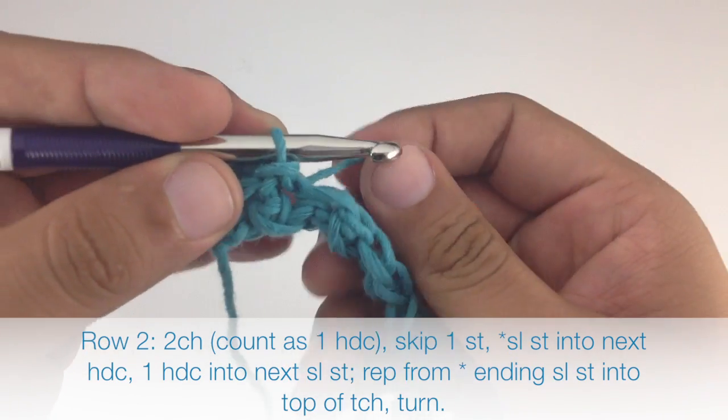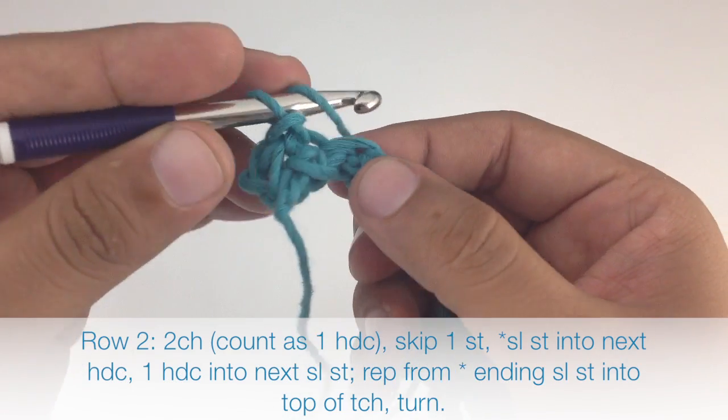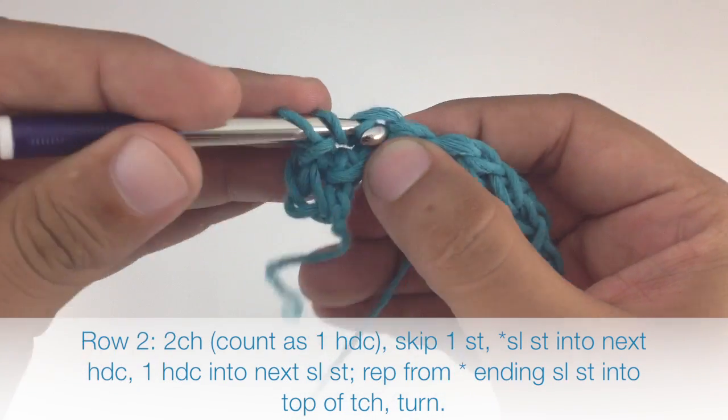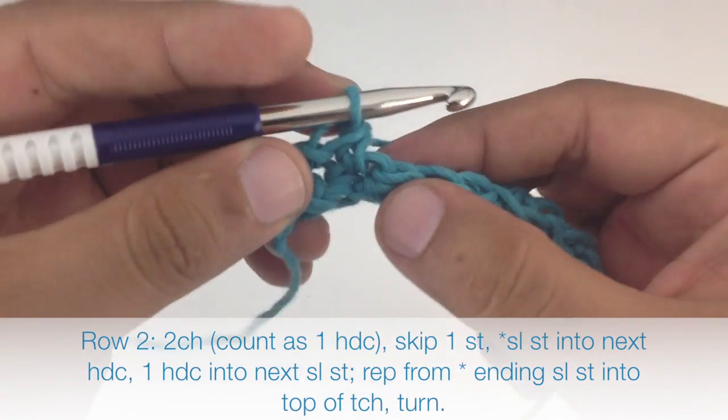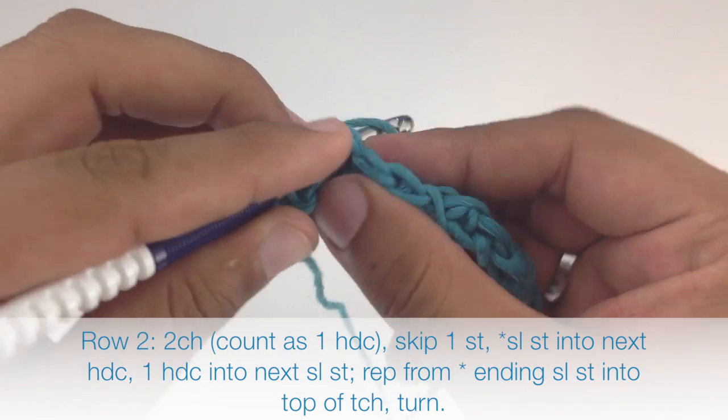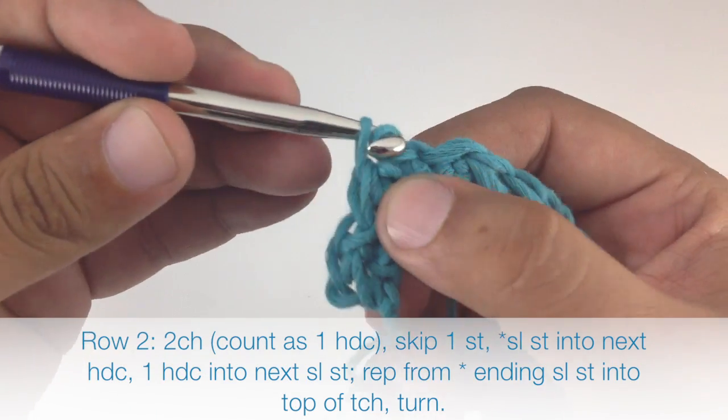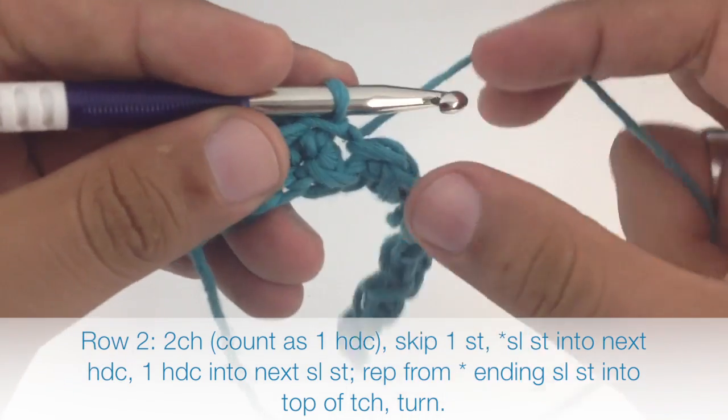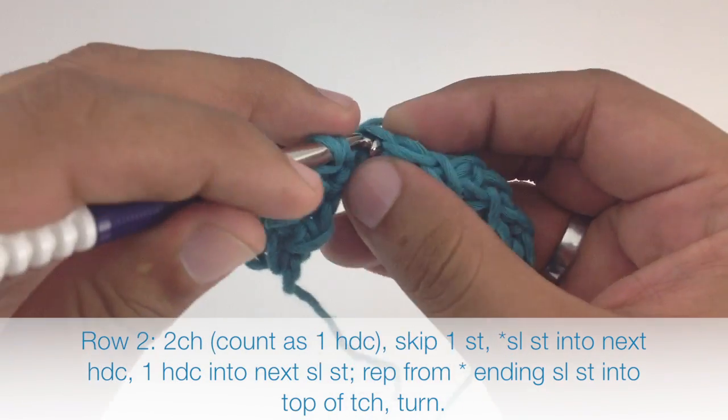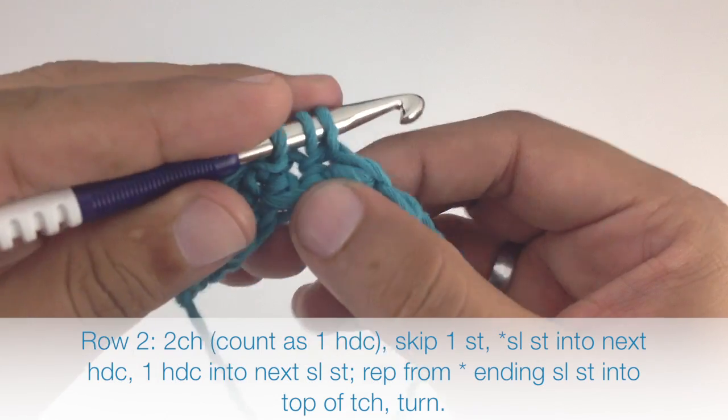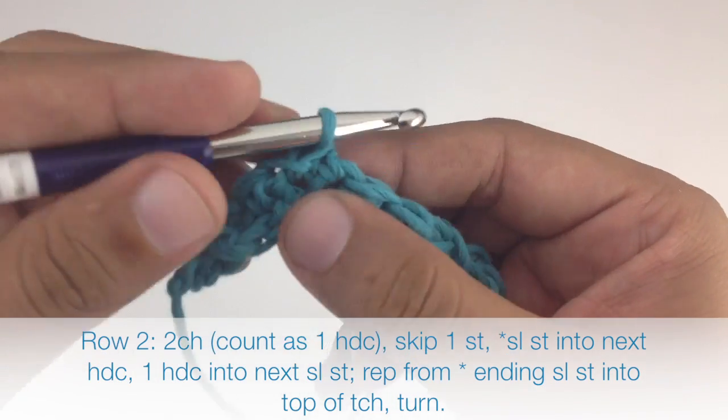Start the repeat by doing a half double crochet into the next slip stitch, and finish the repeat by doing a slip stitch into the next half double crochet. Continue repeating this sequence until you reach the last stitch in the row, where you will do a slip stitch into the turn chain.